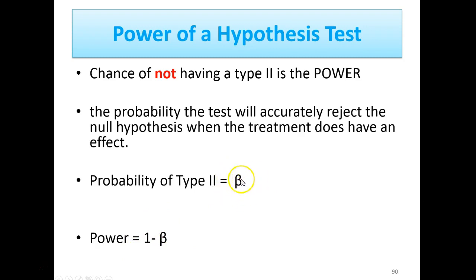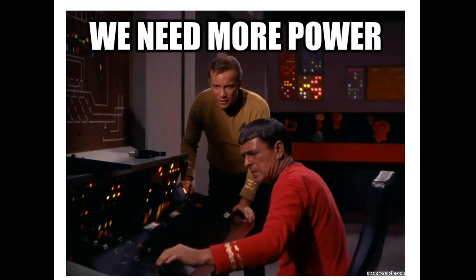So the power is going to be 1 minus beta. So if there's a 5% chance of making a Type II error, you have 95% power. And you want your power to be as close to 100% as possible. That would be being more powerful. So we always need more power.